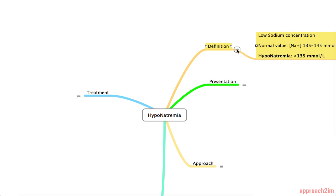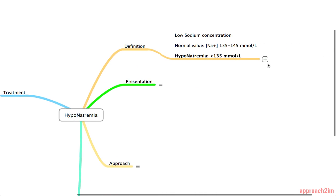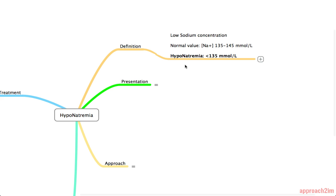So let's start with the definition. Hyponatremia is essentially a low sodium concentration and you should remember the normal value which is a sodium concentration between 135 and 145, so obviously hyponatremia is less than 135.